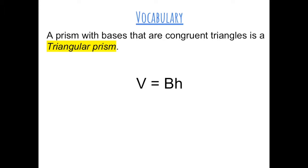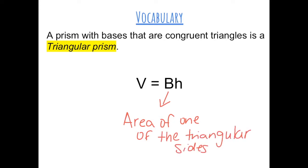A prism with bases that are congruent triangles is a triangular prism. To find the volume of a triangular prism, you use the formula V equals B times H, where B is the area of one of the triangle sides, and H represents the height from one triangle side to another triangle side.